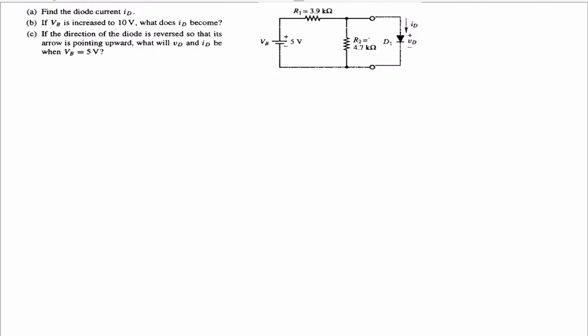We can find this by graphical approximation. To do this, we need the load line equation. The load line equation for a PN junction diode is Vd equals Vthevenin minus Id times Rthevenin. So the load line equation is a Thevenin equivalent connected to the diode.